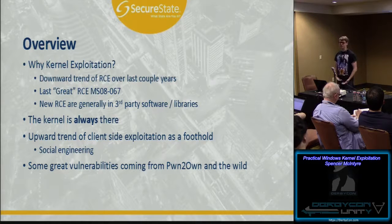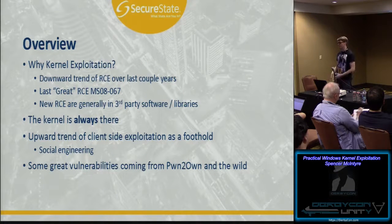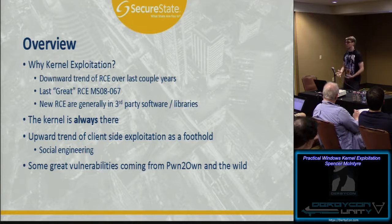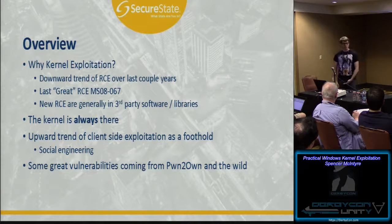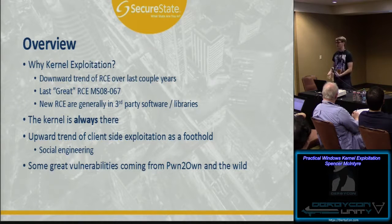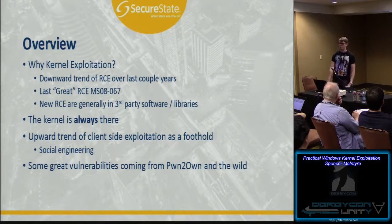One of the reasons why we want kernel exploits is that the kernel is always there — the Windows kernel is always going to be there. It's an attack surface that is not easy to get away from. This also leads into why you see a lot of client-side exploits that leverage kernel vulnerabilities as a second phase: once an attacker compromises a browser, they leverage a kernel vulnerability to escalate and get out of a sandbox. A lot of these are being released from Pwn2Own — there are fantastic bugs coming out there.